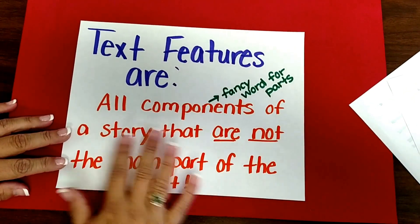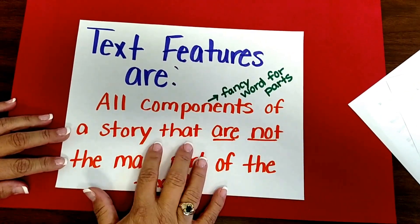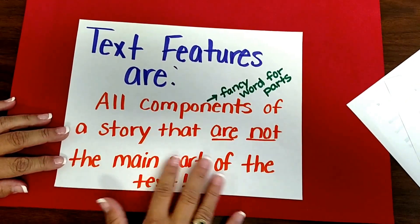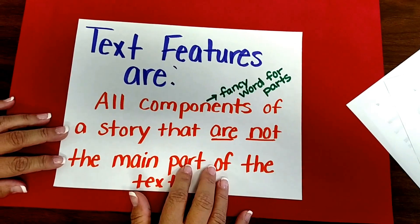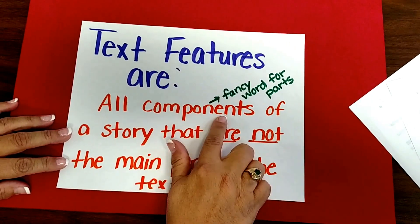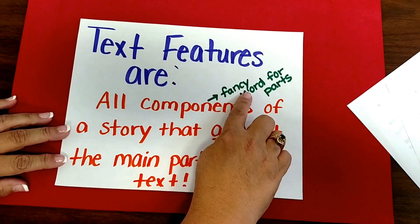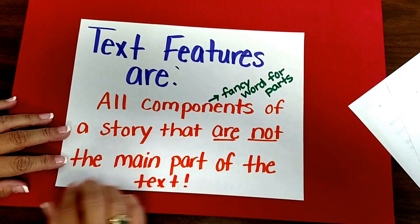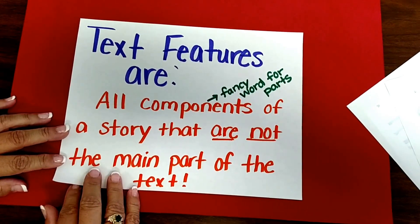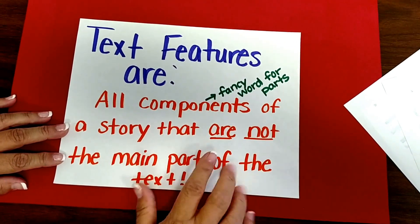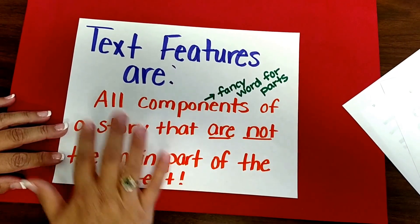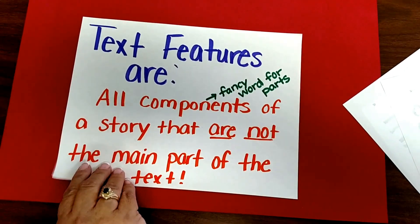Text features are components of a story that are not the main part of the story — and components is just a fancy word for parts. So all parts of a story that are not the main part is what text features are.